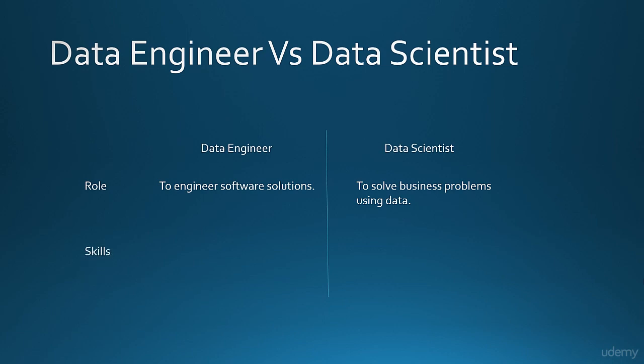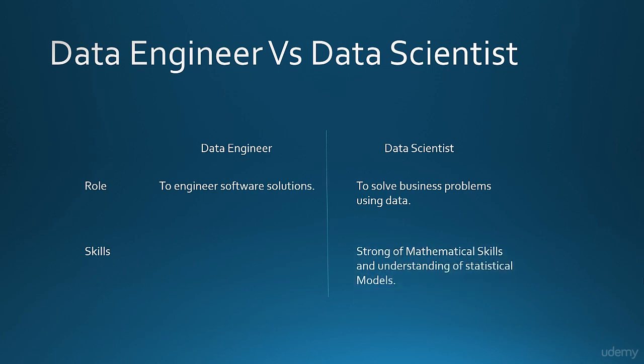Skills required for data scientists would be a good mathematical knowledge and a greater understanding about statistical models with a little programming skill as well. On the other hand, skills expected from a data engineer would be strong technical knowledge, programming skills, and the ability to formulate technical solutions. A little statistical knowledge would come in handy. Although in the real world, there is a lot of overlap between the two roles.